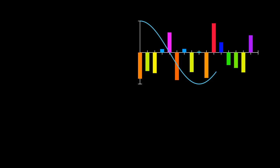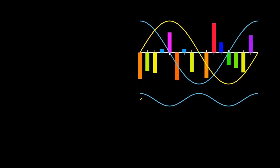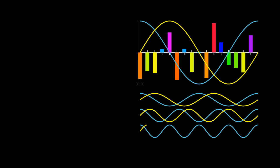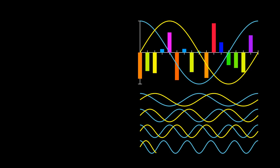These include the fundamental frequency of the data set, twice the fundamental frequency, three times the fundamental frequency, four times and so on, up to a factor of one half the number of samples. There is also zero times the fundamental frequency to get the DC component.